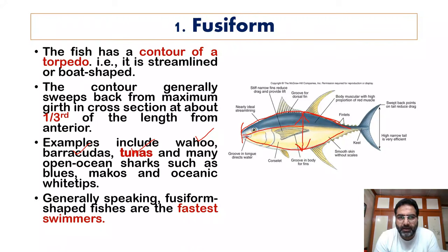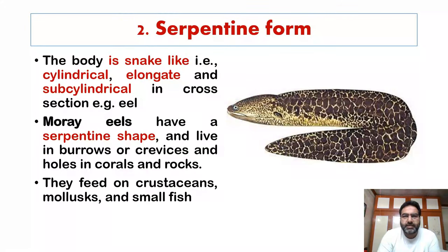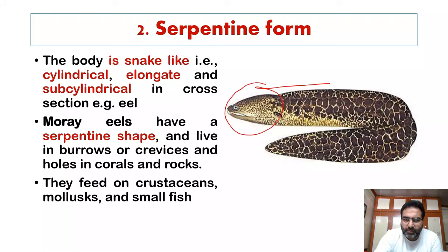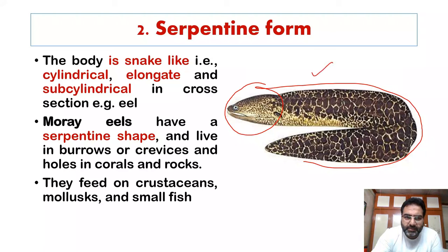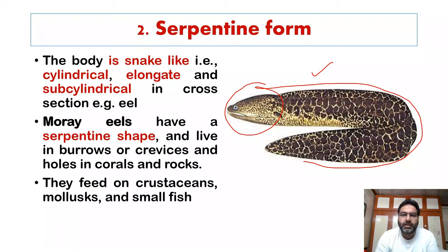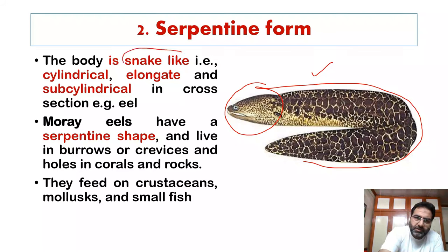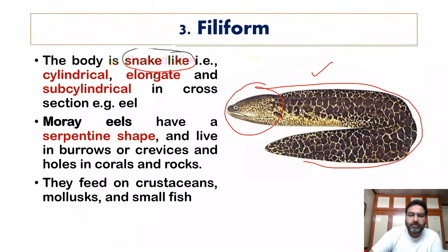Next, we shall talk about the serpentine form, regarded as the eel-like form. The body here is snake-like, cylindrical, elongate, and sub-cylindrical. Moray eels are the primary example — they have a serpentine shape and live in burrows, crevices, and holes in corals and rocks, feeding on crustaceans, mollusks, and small fish.